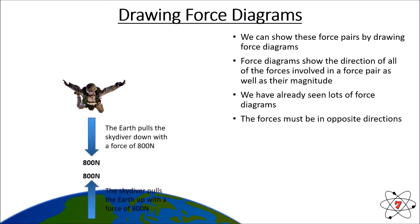We know that forces must be in opposite directions. Here, the Earth is pulling down the skydiver at a force of 800 newtons, because he has a mass of 80 kilograms. The skydiver is pulling the Earth up with a force of 800 newtons. So we have two forces, opposite directions, equal in magnitude. Obviously the skydiver, having a small mass, is going to be greatly affected by 800 newtons, whereas the Earth being massive won't be affected at all. But we have opposite forces, opposite directions, equal magnitude — there must always be an action and a reaction.